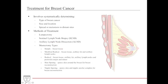Treatment of breast cancer is complex. First, you determine whether the condition is benign or malignant. Once confirmed malignant, determine the type — lobular or ductal — and whether it is in situ or invasive. Then hone in on the size and location of the mass, and determine if it has spread to the other breast, lymph nodes, or distant sites including the lungs, bones, or brain.